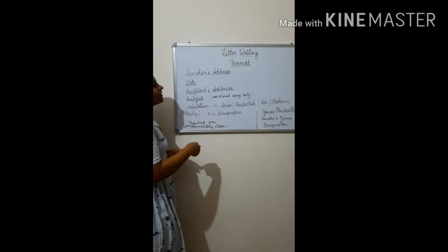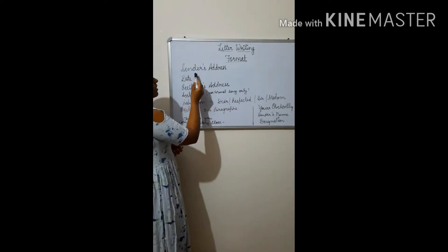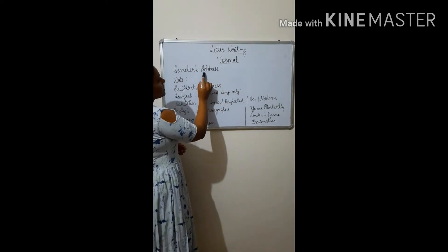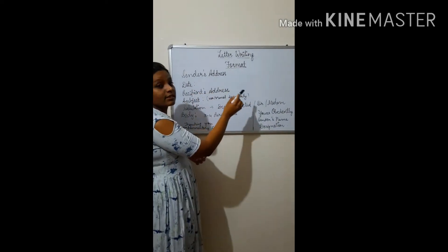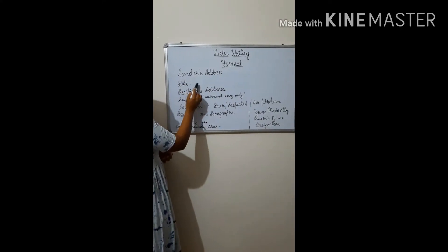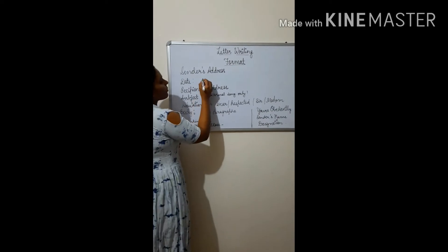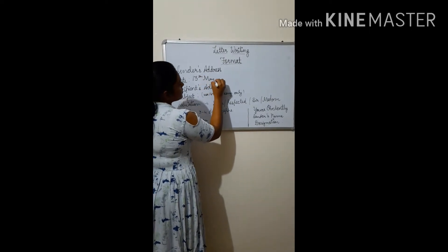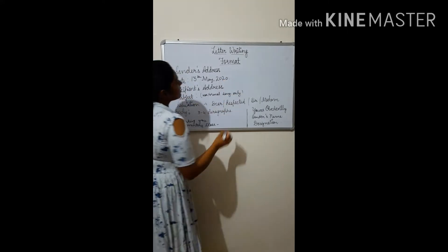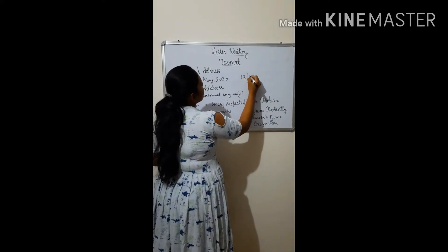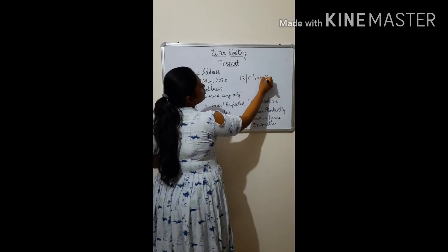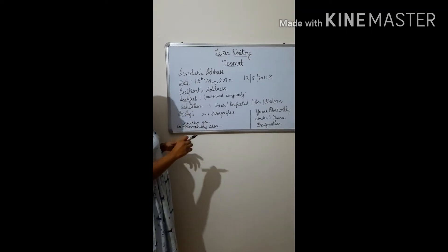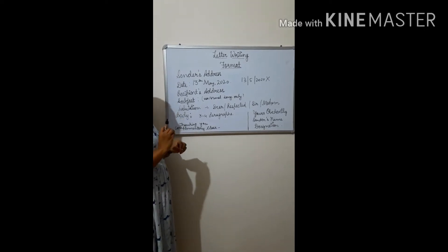So this is format of formal letter. First of all, we will start from the top left corner of the page by sender's address. Sender's address is the address of a person who is writing the letter. After that, date, when the letter is written. Date should be written in this format. For example, today is 13th May, so 13th May 2020. Letter should be written in this format only. After that, recipient's address comes to whom we are sending the letter by proper name, place, and designation.